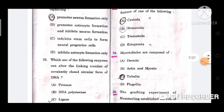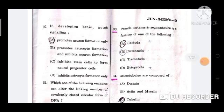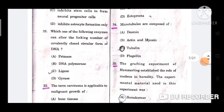Question number 33: Pseudometameric segmentation is a feature of one of the following. The correct answer is option A, Cestoda.